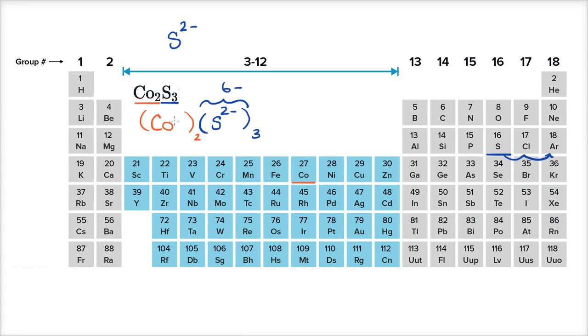Well that means that each of them need to have a three plus charge. If each of these have a three plus charge, and you have two of them, then you're going to have six plus on the positive side, and you're going to have six minus from the sulfides. And the reason why this is useful for us is now we can name this.